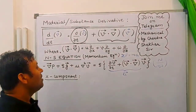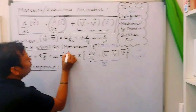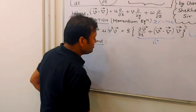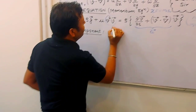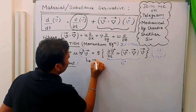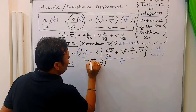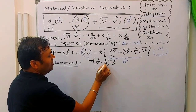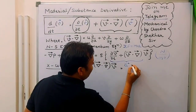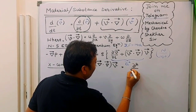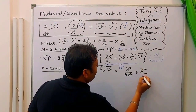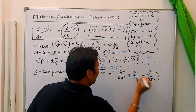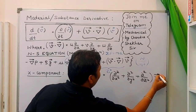Now, what is this del-squared V? How do we write del-squared V? Del-squared is nothing but del-dot-del. If we take the dot product of del and del, it becomes del-squared by del-x-squared plus del-squared by del-y-squared plus del-squared by del-z-squared, multiplied by the velocity vector — that is u-i plus v-j plus w-k.